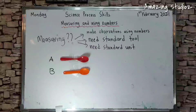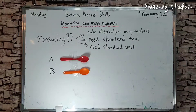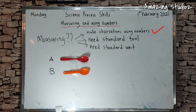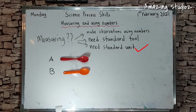We start our lesson today: measuring and using numbers. What is measuring? It means making observations using numbers — 1, 2, 3, 4, 5, 100, 200. We need standard tools and a standard unit. Let's see.